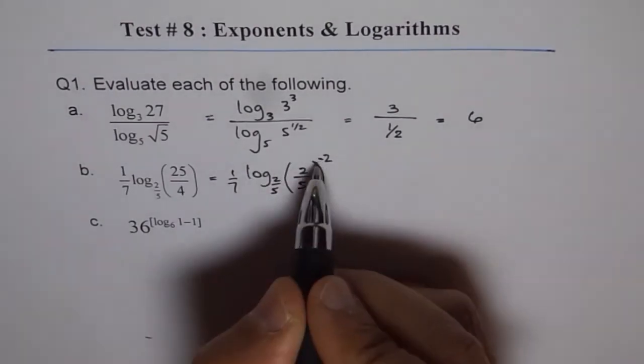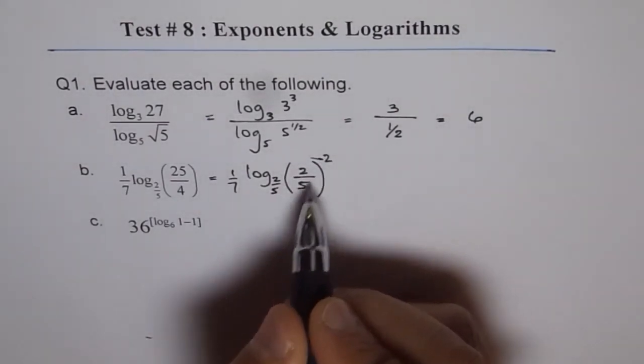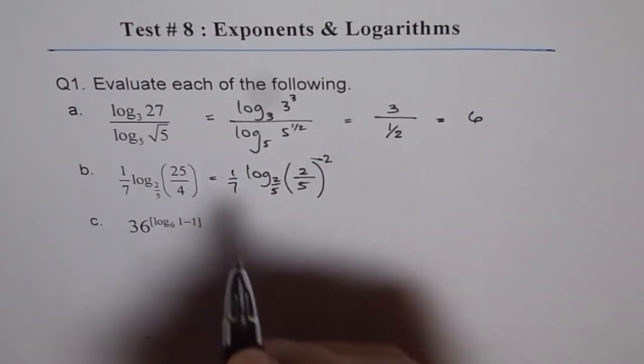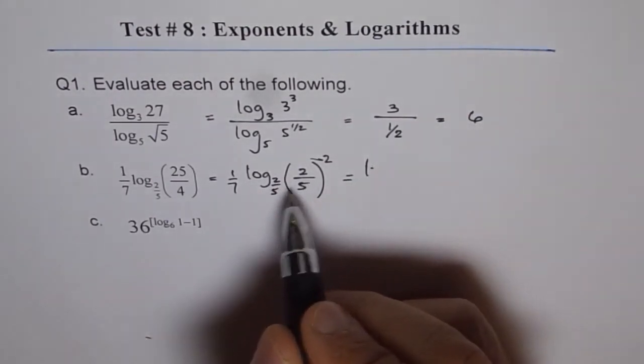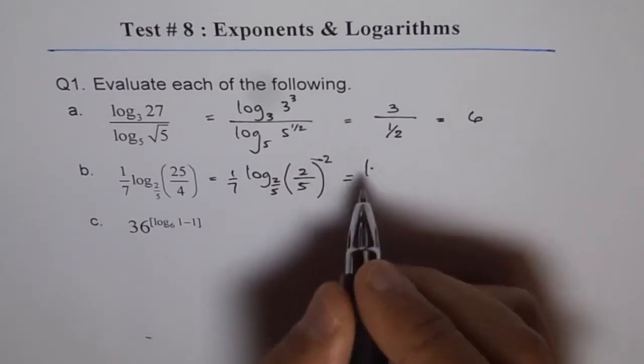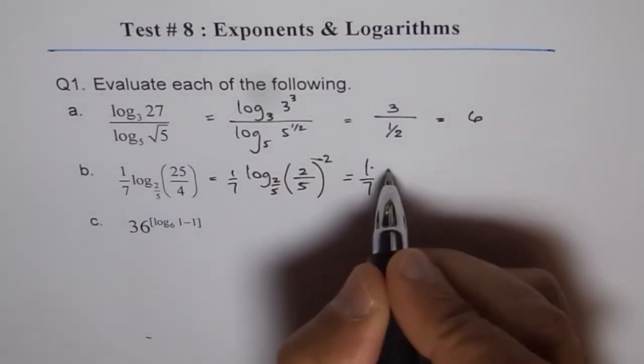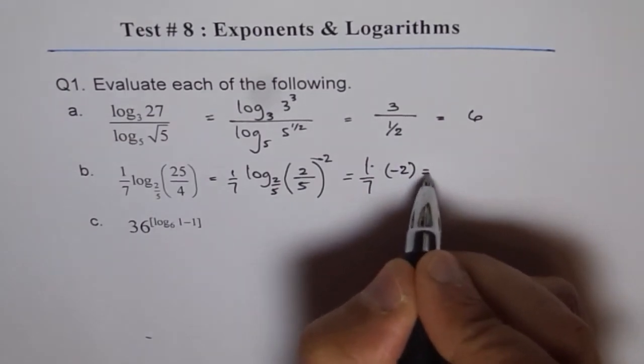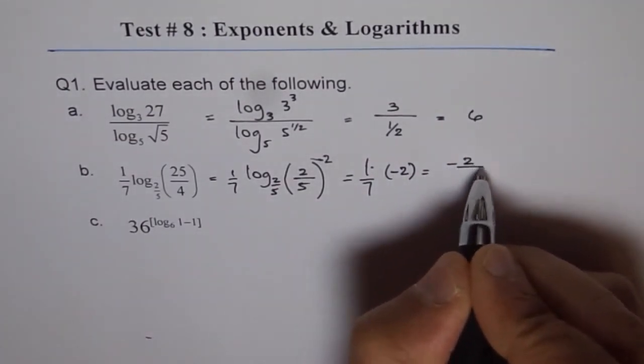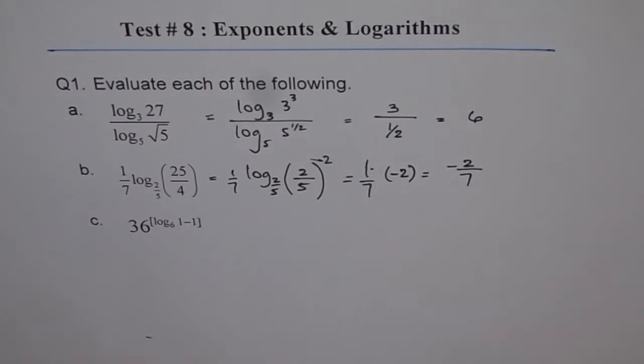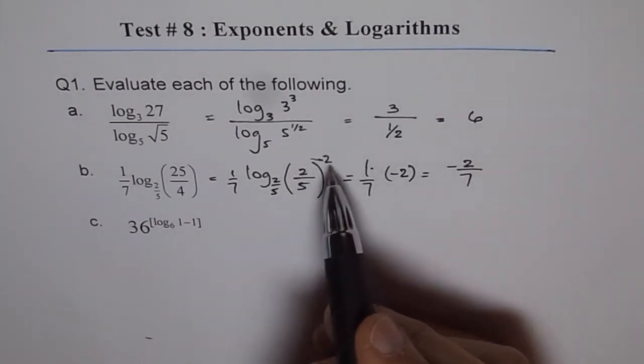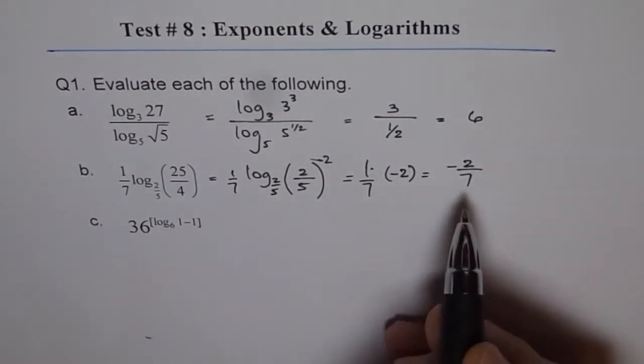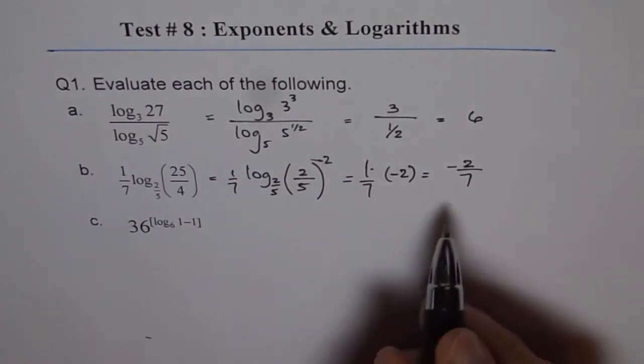So 2 squared is, this is minus. And 5 squared is 25. And now we can write this as, so this becomes 1 over 7 times minus 2. So this could be written as minus 2 over 7. So that is how we can solve this question. There was no point in taking this to the exponent and bringing it down. I just brought minus 2 down. So that is how you do B.